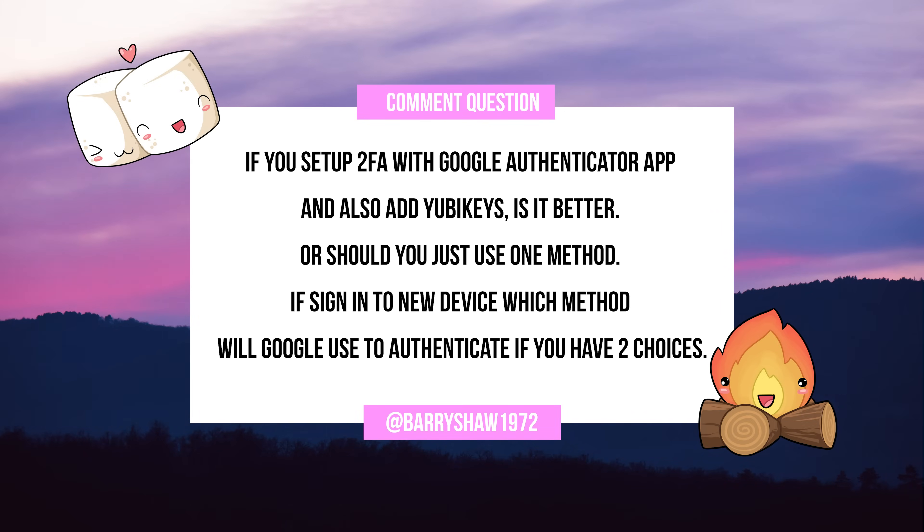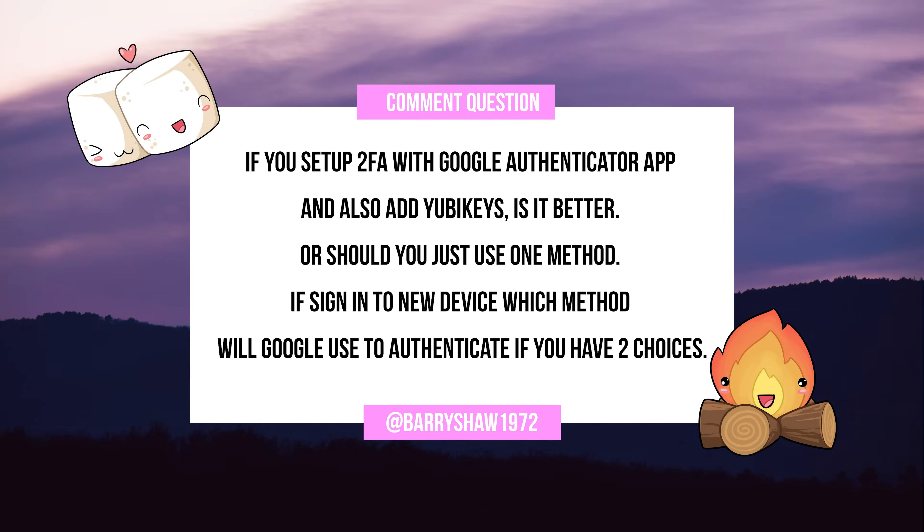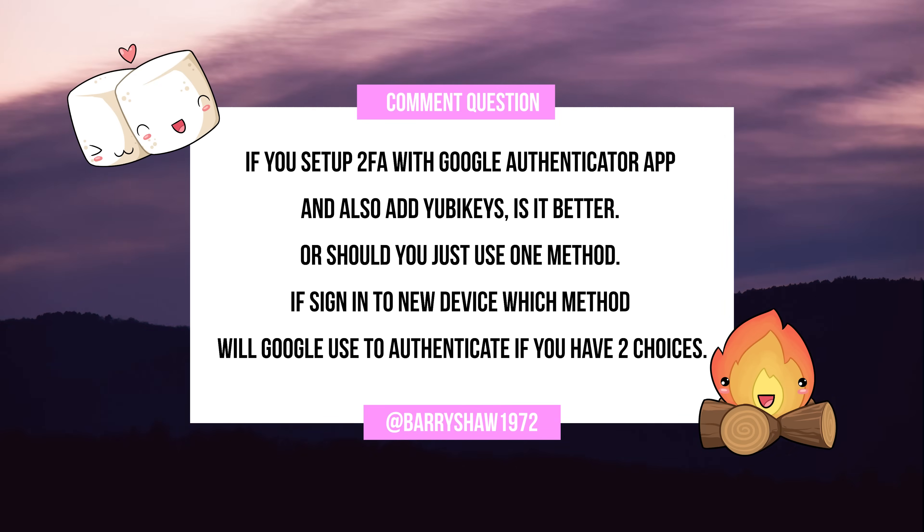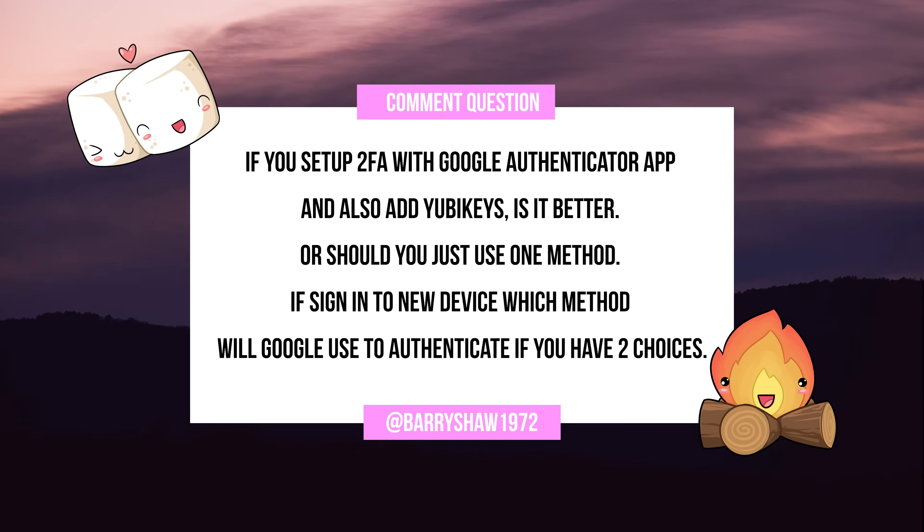From Barry Shaw 1972: if you set up 2FA with Google Authenticator's app and you also add YubiKeys, is it better? Or should you just use one method? If signing into a new device, which method will Google use to authenticate if you have two choices? So with two-factor authentication, there are certainly different methods that you can choose depending on the website. In this example, we will talk about Google. Google does support passkeys nowadays, but if you still want to use your YubiKey for MFA — where you still have to input your username and password to log in, then your MFA method on a second screen — you do have several different options. Google lets you choose from several different methods and does not restrict you to use just one. So should you use the YubiKey, use a six-digit code, or should you use both?